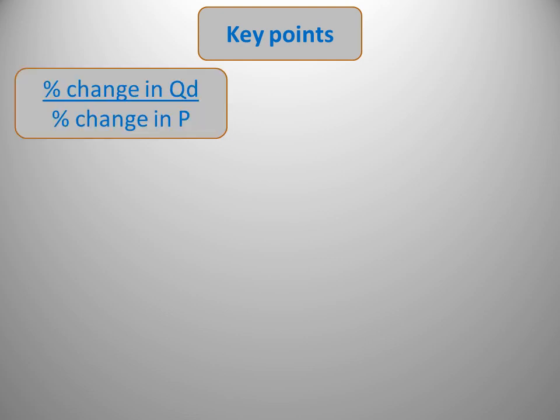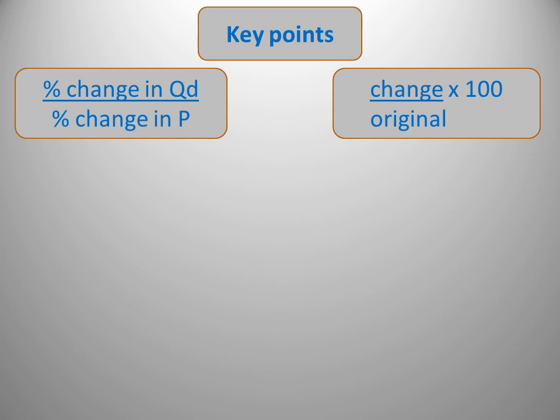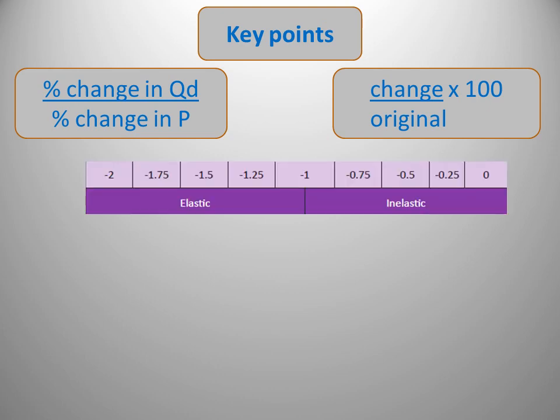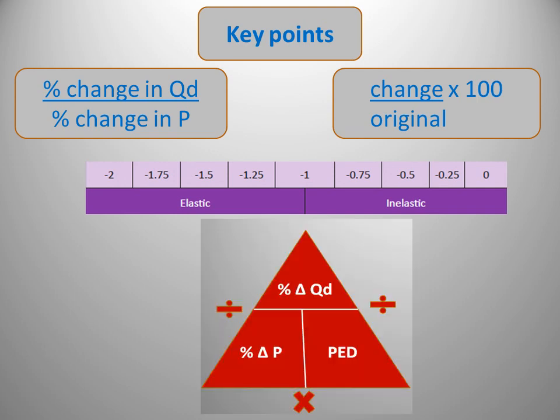What were the key points in this video? We can calculate PED using the formula: percentage change in QD divided by percentage change in price. To calculate percentage change, we take the change — the difference between our two numbers — divided by the original and multiplied by 100. Calculating PED gives us a coefficient, which we can use to identify whether a product is elastic or inelastic. If we're given any two of the three variables, we can always calculate the third using the handy diagram.